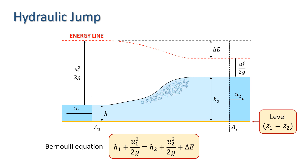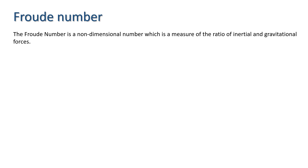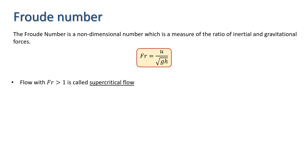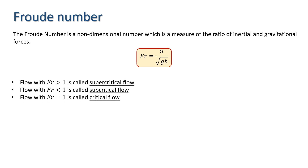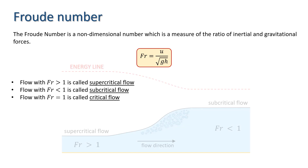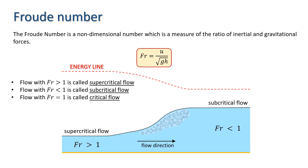Before using that, I'm going to introduce the notion of the Froude number. The Froude number is a non-dimensional number which is a measure of the ratio of inertial and gravitational forces. It is calculated by dividing the average velocity by the square root of g times the pressure head. In flow with a free surface, inertial and gravitational forces are predominant, so the Froude number is of great significance. Flow with a Froude number greater than one is called supercritical flow, flow with a Froude number less than one is called subcritical flow, and flow with a Froude number equal to one is called critical flow. In the hydraulic jump, supercritical flow changes into subcritical flow.